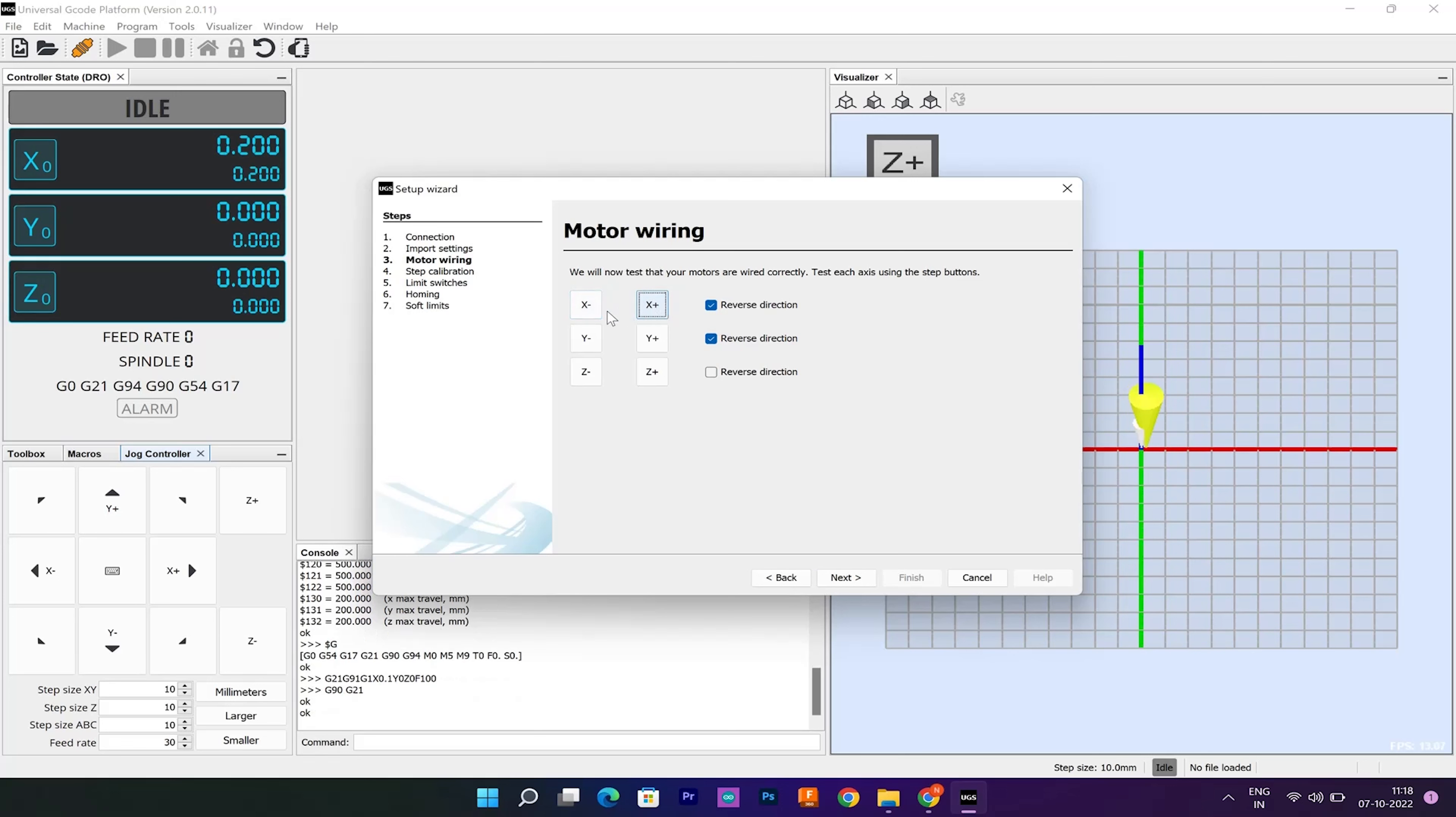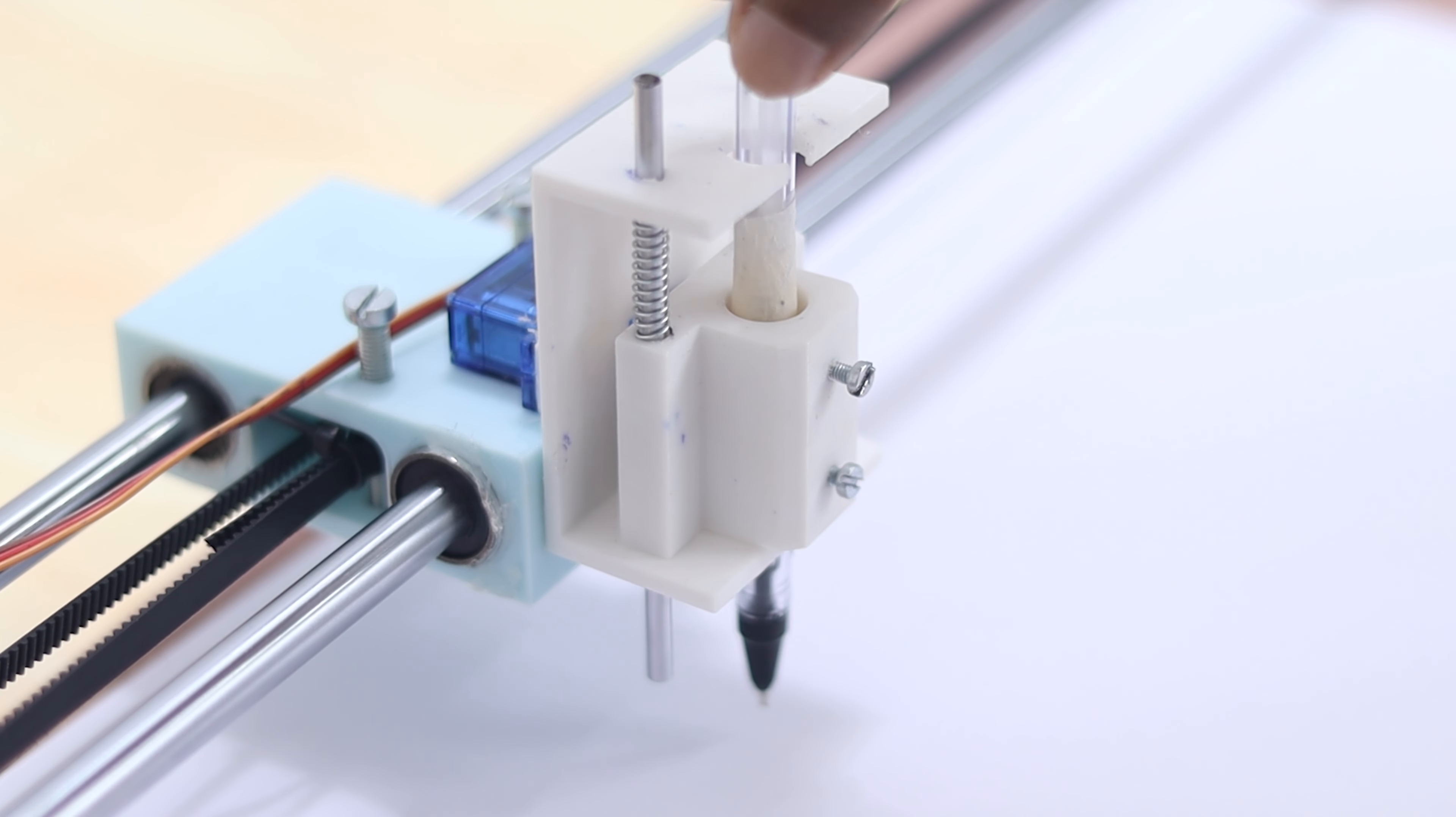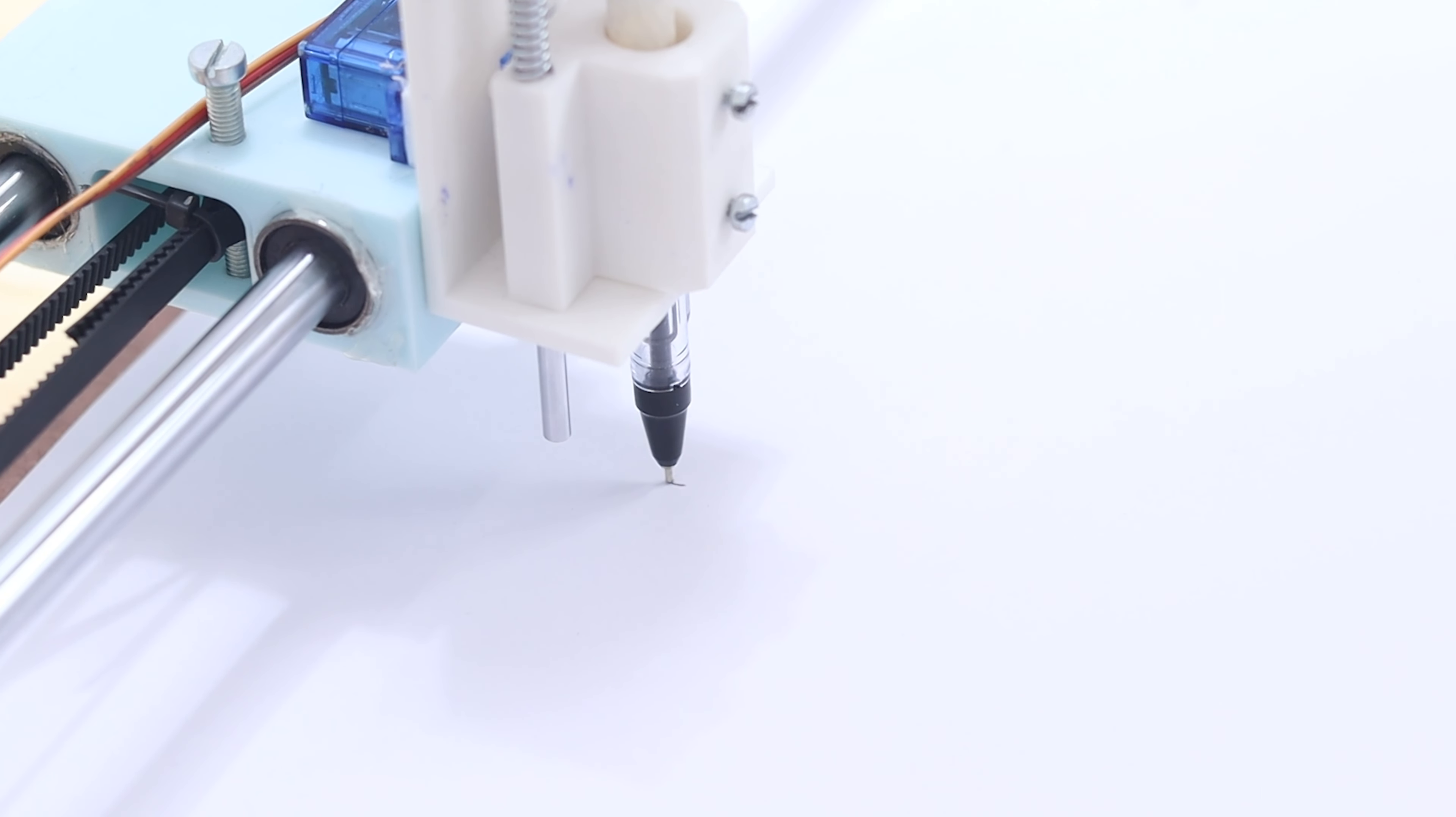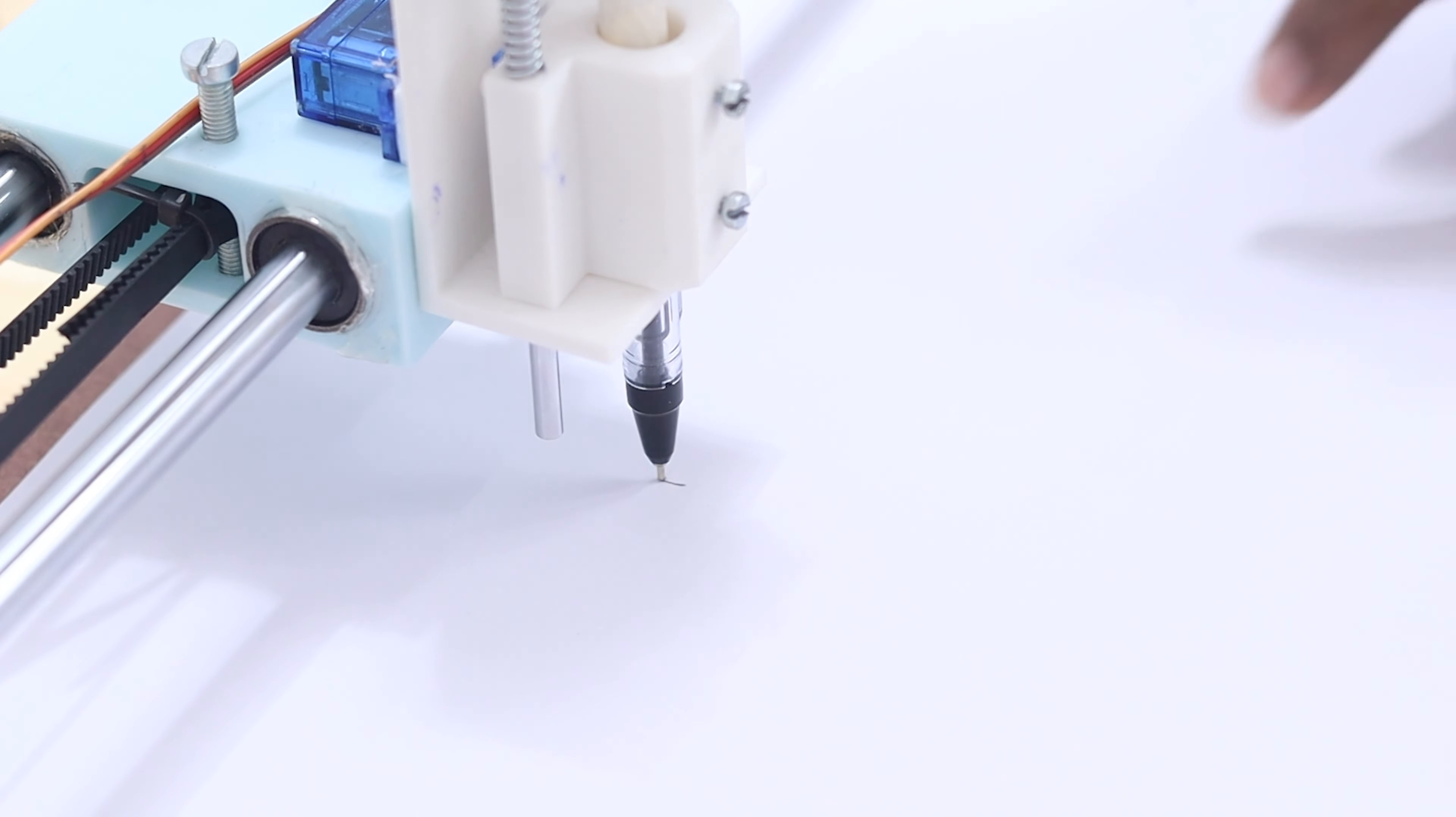In the next step, we need to calibrate the motors. Without calibration, you can't get the proper scale which we are supposed to draw. So we inserted a pen into the pen holder. For calibrating the X-axis stepper, we pressed the X plus button. Using a ruler, we measured the actual movement the machine made and entered that value in the actual movement field.